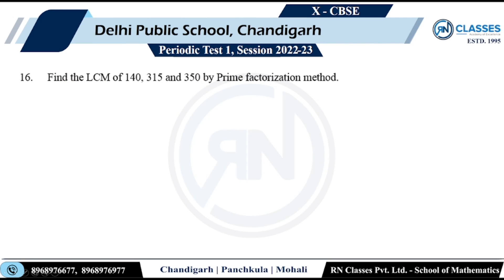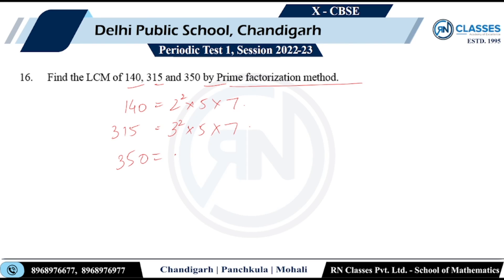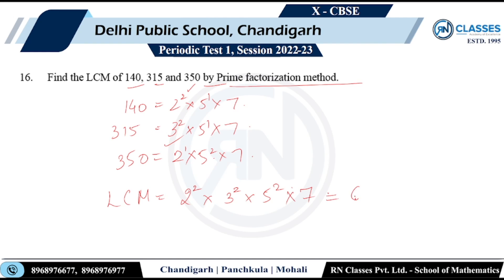Question 18: Find the LCM of 140, 315, and 350 by prime factorization. 140 = 2² × 5 × 7; 315 = 3² × 5 × 7; 350 = 2 × 5² × 7. For LCM: take 2², 3², 5², and 7. The LCM = 2² × 3² × 5² × 7 = 6300.